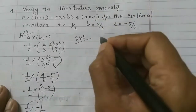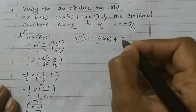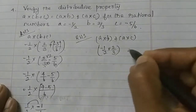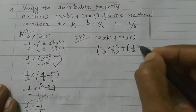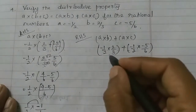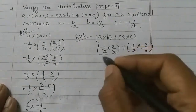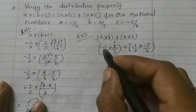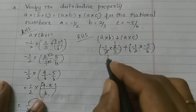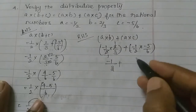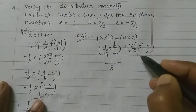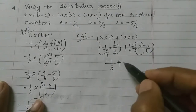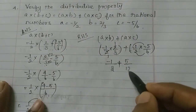Now we verify the right hand side. Right hand side is A into B plus A into C. So A equals minus 1 by 2 into B equals 2 by 3, plus A equals minus 1 by 2 into C equals minus 5 by 6. We multiply each bracket. Simplify: 2 ones are 2 and 2 ones are 2. For the first term, minus 1 into 1 is minus 1 over 1 into 3 equals 3. For the second term, numerator into numerator, denominator into denominator: minus into minus is plus, so 1 into 5 equals 5 over 6.